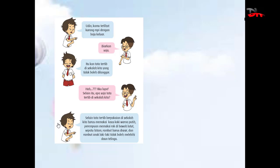Aku lupa. Selain itu, apa saja tata tertib di sekolah kita? Selain tata tertib berpakaian sekolah, kita harus memakai kaos kaki putih, perempuan memakai rok di bawah lutut, sepatu hitam, rambut harus disisir, dan rambut anak laki-laki tidak boleh melebihi daun telinga.